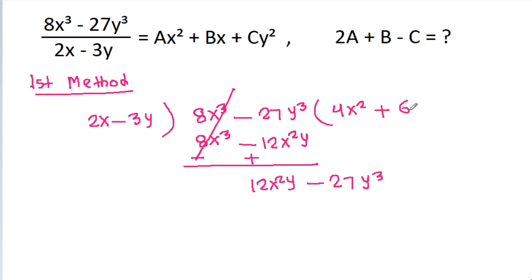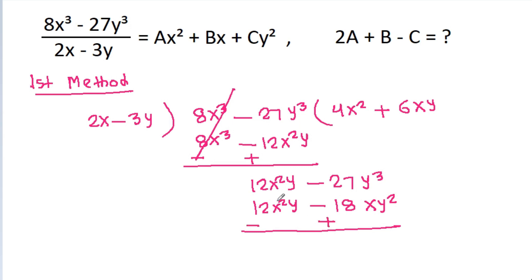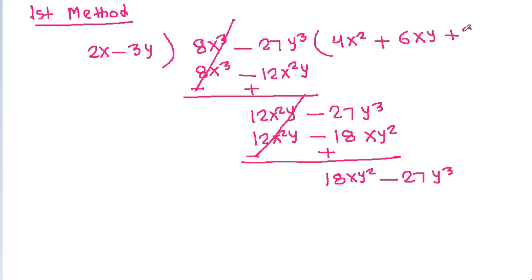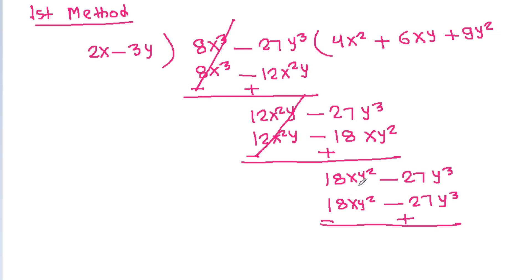2x times 6xy is 12x²y and minus 3y times 6xy is -18xy². The sign will change and this will get cancelled, giving 18xy² - 27y³. Then 2x times 9y² is 18xy² and minus 3y times 9y² is -27y³. The sign will change and both terms cancel.